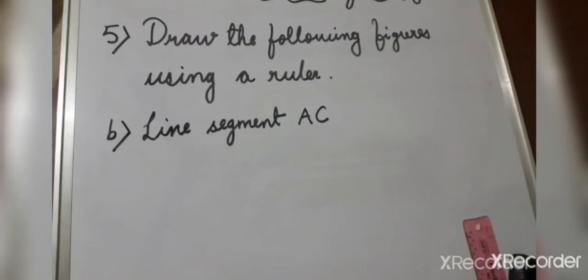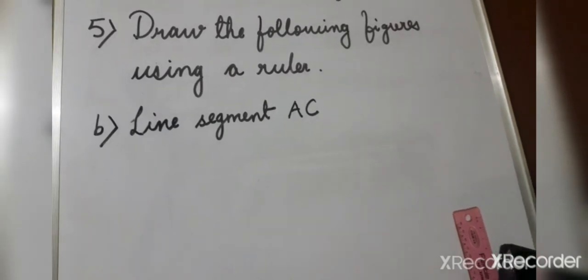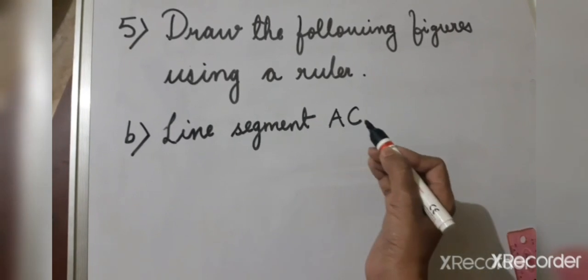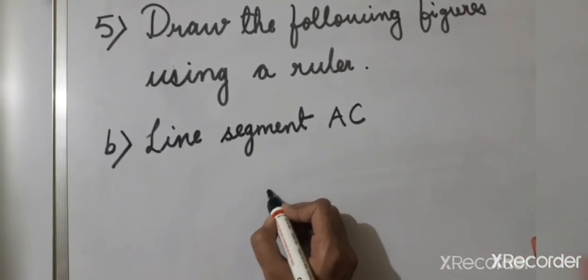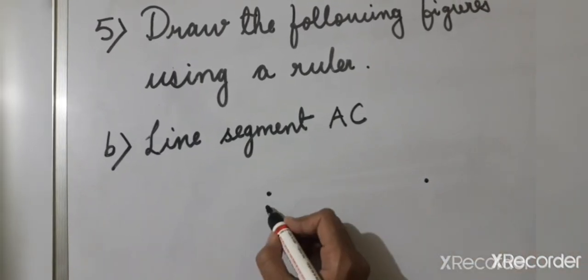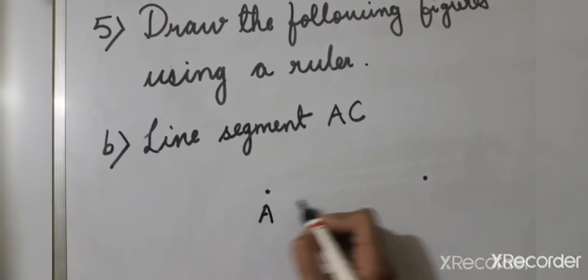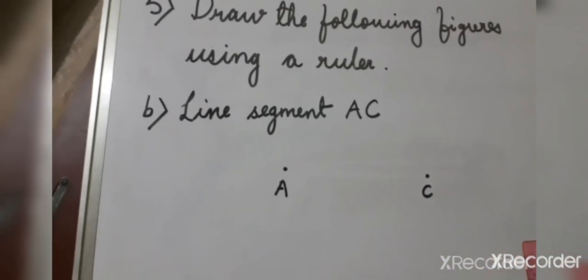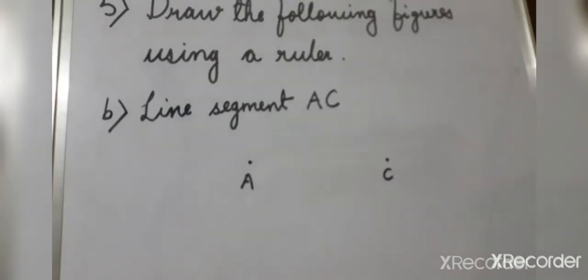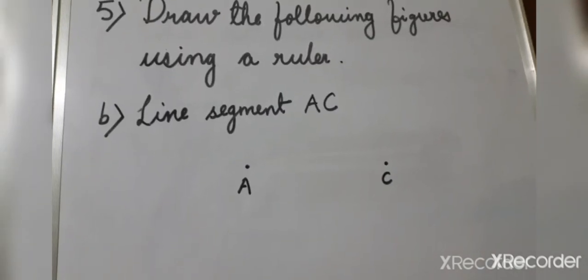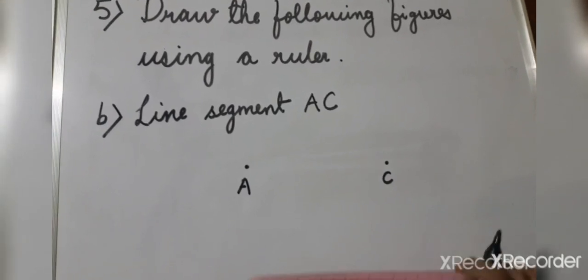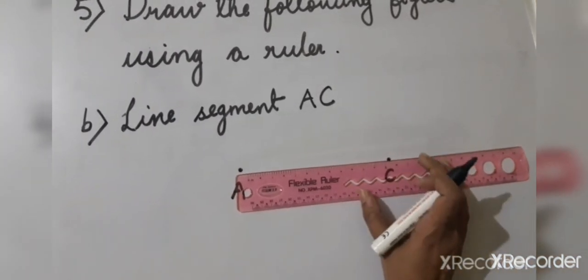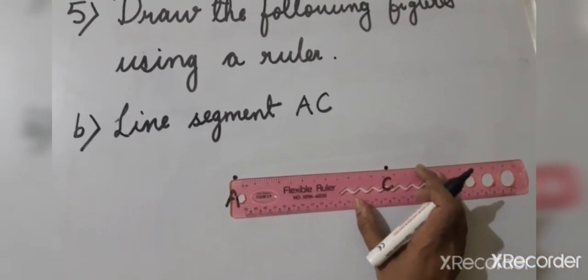Now question number B, where we have to draw a line segment AC. Again, first we will draw 2 points and give them the names point A and point C. Now, because this is a line segment — if you remember, a line segment has a fixed length and it cannot be extended from any side. So simply here we will join these two points to make the line segment AC.